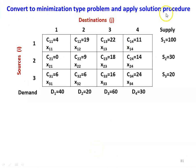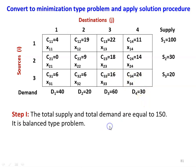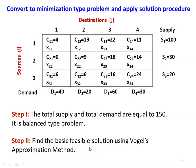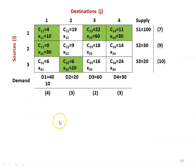The converted minimization matrix is: c11=4, c12=19, c13=22, c14=11, c21=0, c22=9, c23=18, c24=14, c31=6, c32=6, c33=16, c34=24. The total supply and total demand are both equal to 150, so it is a balanced problem. We can proceed to find the basic feasible solution using Vogel's approximation method by finding the difference between the minimum and next minimum cell values for each row and column.